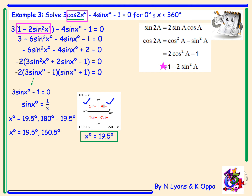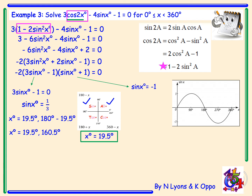Next, sinx + 1 = 0 rearranges to sinx = -1. Drawing the sine graph, it equals -1 at 270 degrees. Therefore our final solution for x is 19.5°, 160.5°, and 270°.